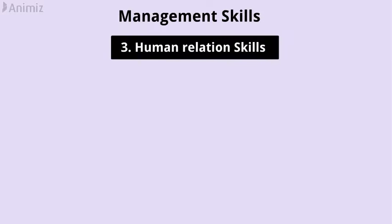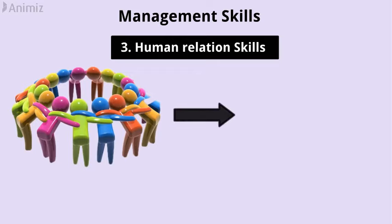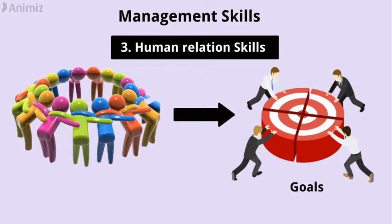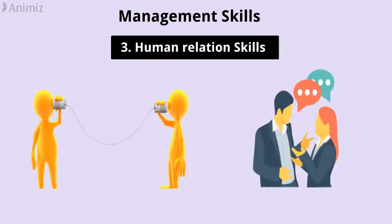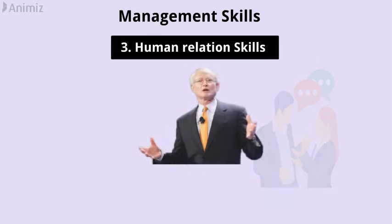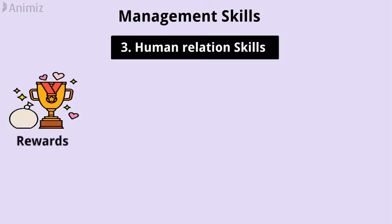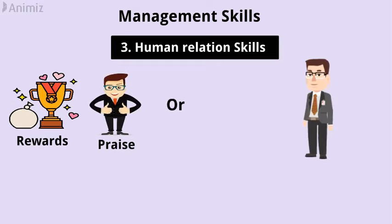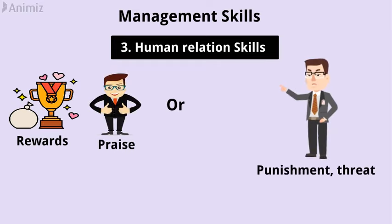3. Human relations skills. Human relations skills is the ability to work with other people and reach organizational goals. Communication skills is the ability to transfer information to others effectively. Motivating skills is to inspire people to do what the manager wants them to do. The manager can use positive methods like rewards and praise, or negative methods like punishment and threat.